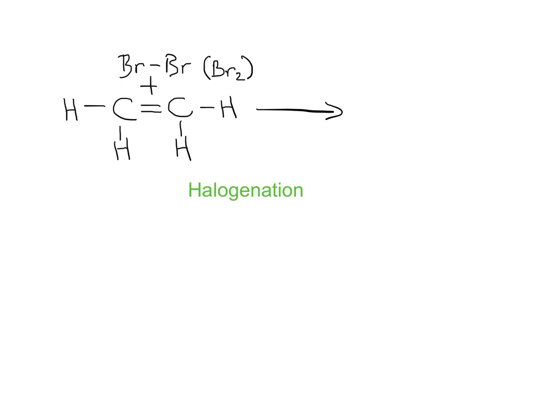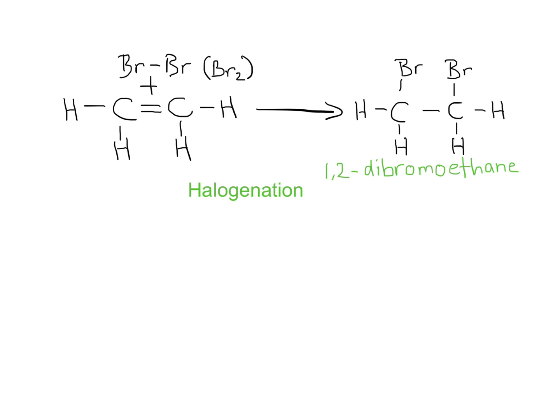If you've drawn the same molecule, you've got it correct. The two bromine atoms add on by breaking the bonds between them; the double bond between the two carbon atoms breaks and we're left with a single bond. This is definitely an addition reaction — I've added two new bromine atoms. I've got two carbons, so this is ETH, and because it has a single bond, it is ethane — specifically 1,2-dibromoethane.